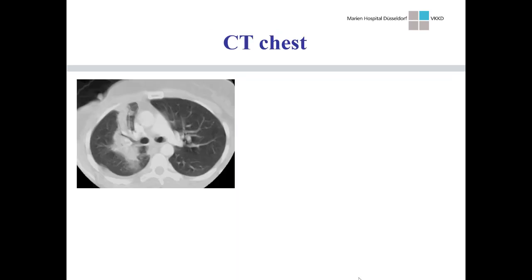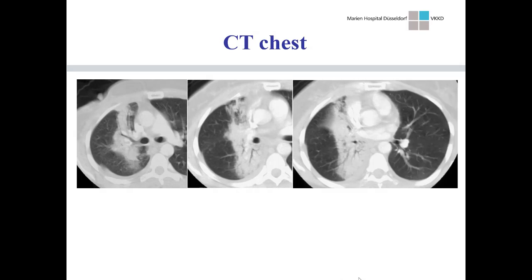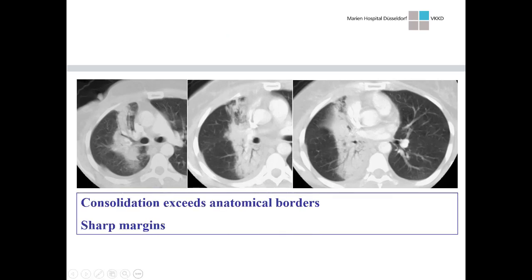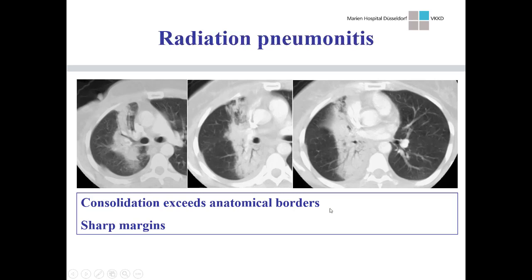We proceeded to a CT scan, and this is a very typical finding. What we see is a consolidation that exceeds anatomical borders — it simply crosses the lobar fissure — but it has relatively sharp margins. Those two are key features for radiation pneumonitis. This makes it very clear the patient does not have pneumonia, and it's very unlikely to represent local recurrence, at least not in a breast cancer patient.